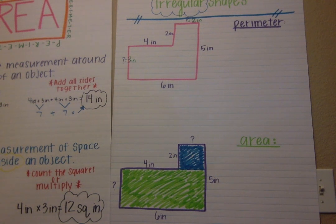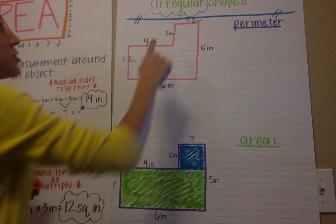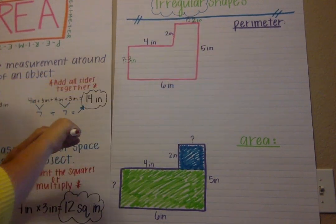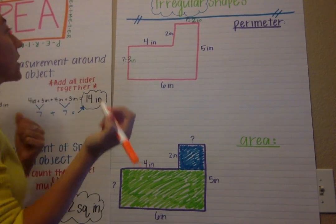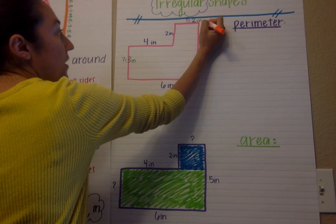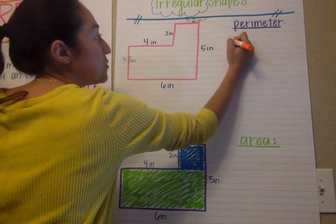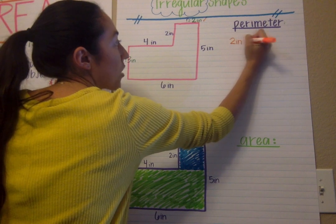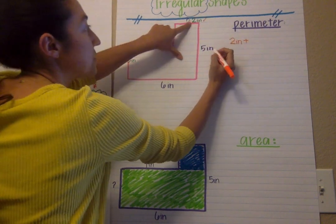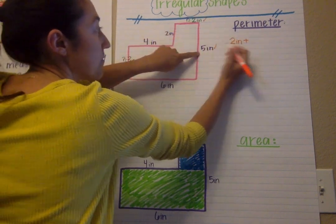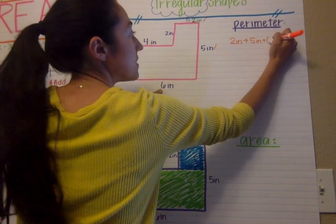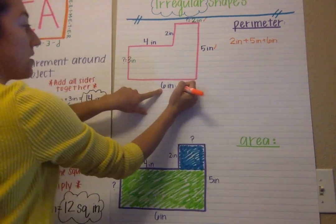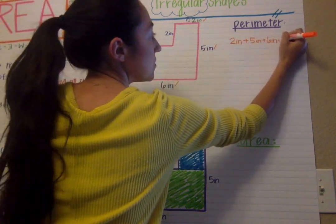So now for perimeter of irregular shapes we are going to add every single side together. This is when it would be helpful to have a different color or make a dot or a check mark next to each number once you put it into your equation. So I put that two so I put a check. Five, check. Six, check. Three, check.